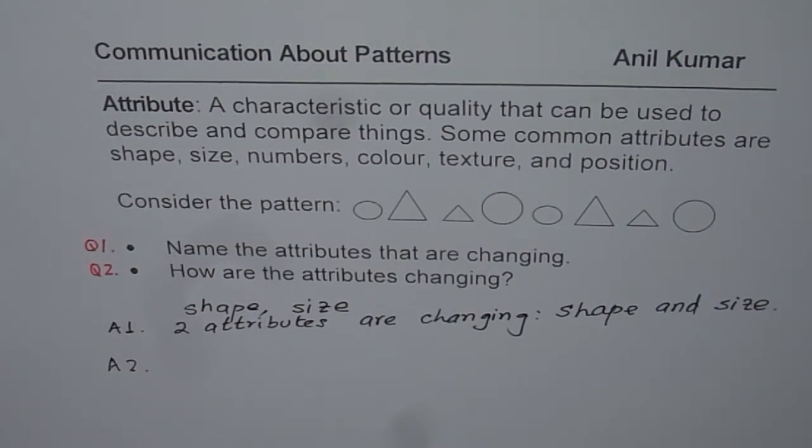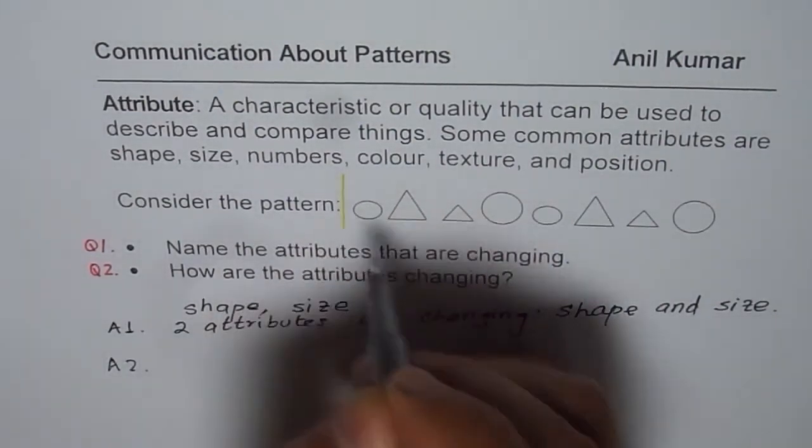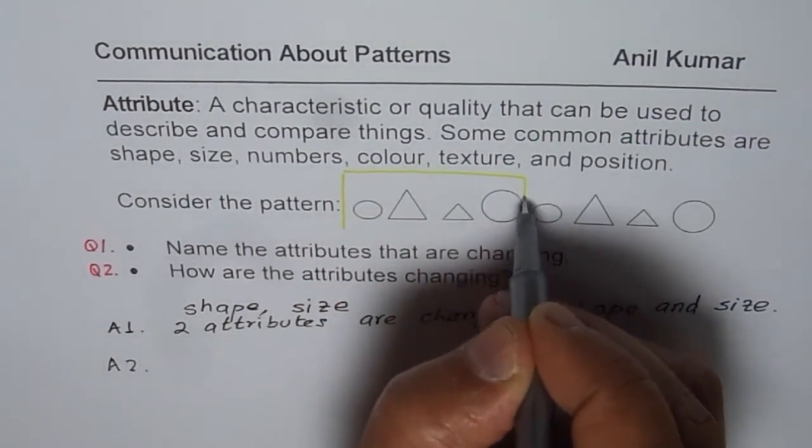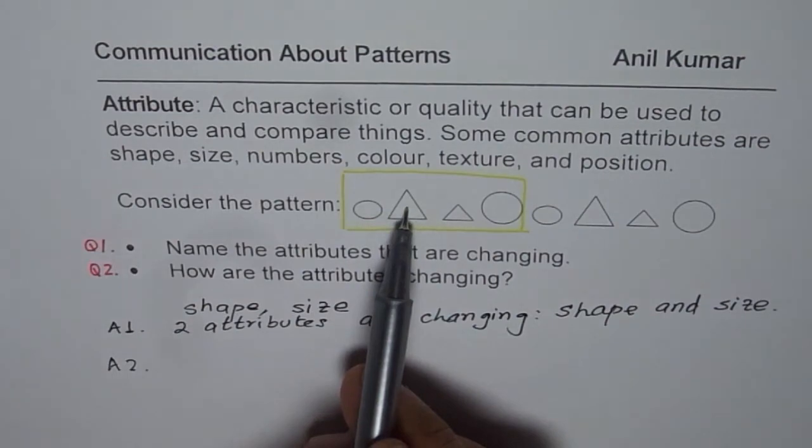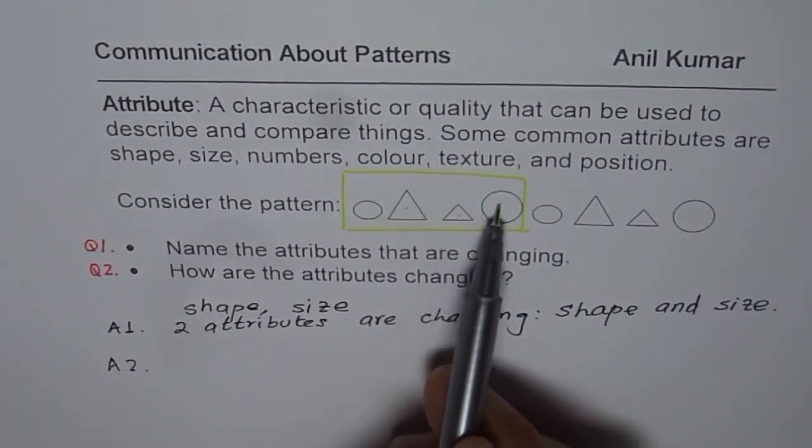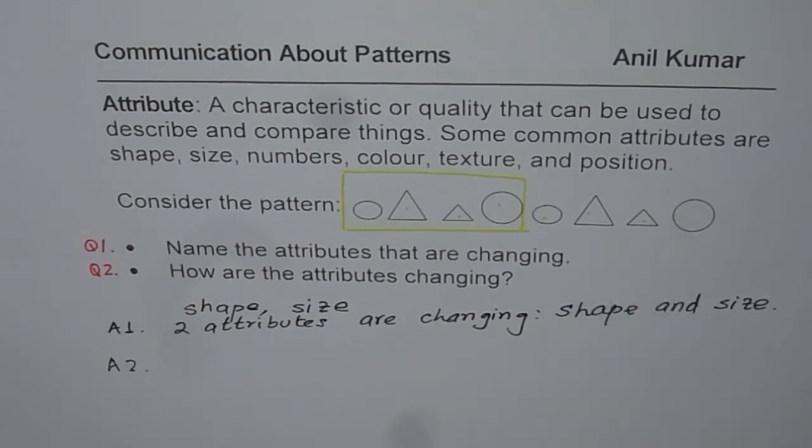Now look carefully at the pattern. What is the kind of pattern we have? And what is changing? So we can identify that this is the group which is changing. Do you see that? Small circle, big triangle, small triangle, big circle, small circle, big triangle, small triangle, big circle.